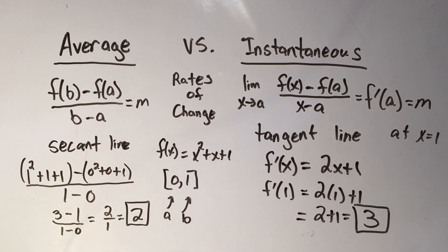So there's the difference between average rate of change and instantaneous rate of change. One's the slope of the secant line, the other is the slope of the tangent line. And that's pretty much all you need to know.